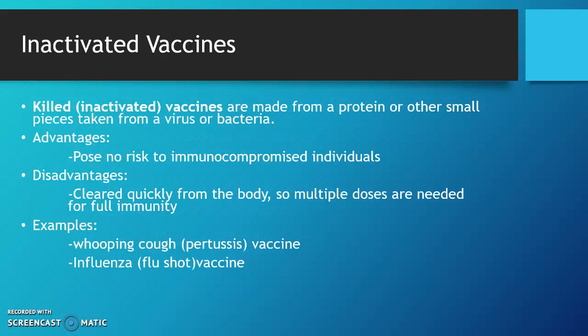Another type is inactivated vaccines, which is a killed inactivated vaccine made from a protein or other small pieces taken from a virus or bacteria. An advantage is that it poses no risk to immunocompromised individuals. A disadvantage is that it clears quickly from the body, so multiple doses are needed for full immunity.